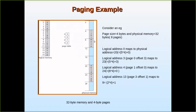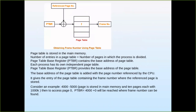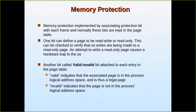Whether a process is present in main memory or not can be indicated by an extra bit called the validation bit, or valid/invalid bit. In the page table itself there will be an extra bit indicating whether a page is present in a particular frame number in main memory. If it is not present, it will indicate an error, because any reference to a page that is not in memory must generate an error.